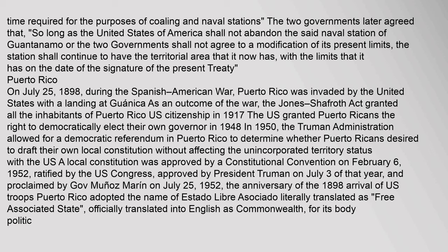Puerto Rico: During the Spanish–American War, Puerto Rico was invaded by the United States with a landing at Guánica. The Jones–Shafroth Act granted all inhabitants of Puerto Rico U.S. citizenship in 1917. The U.S. granted Puerto Ricans the right to democratically elect their own governor in 1948. In 1950, the Truman administration allowed a democratic referendum to determine whether Puerto Ricans desired to draft their own local constitution. A local constitution was approved on February 6, 1952, ratified by Congress, approved by President Truman on July 3, and proclaimed by Governor Muñoz Marín on July 25, 1952. Puerto Rico adopted the name Estado Libre Asociado, officially translated into English as Commonwealth.